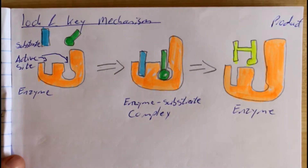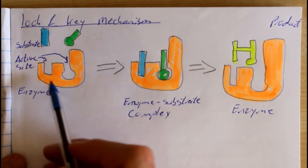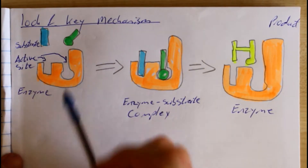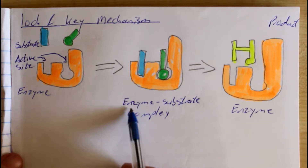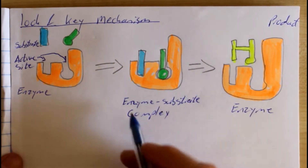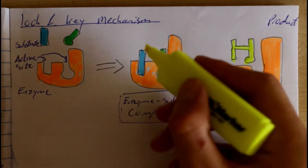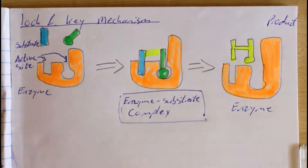The area where the substrate binds to the enzyme is called the active site. In the lock and key mechanism, we have our enzyme and its active site, and here we have two substrate molecules about to bind to those active sites. Once the enzyme and substrate have bound, it becomes known as the enzyme-substrate complex. The enzyme joins these two molecules together to form a product — this is how an enzyme changes a substrate into a different molecule.